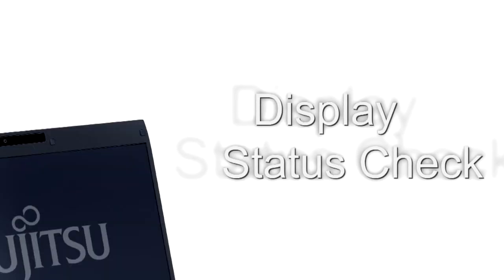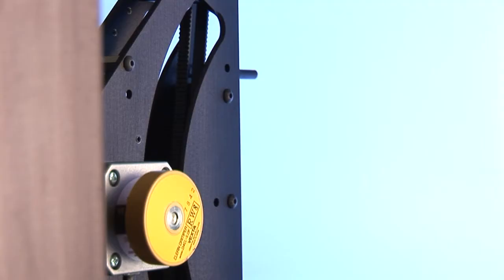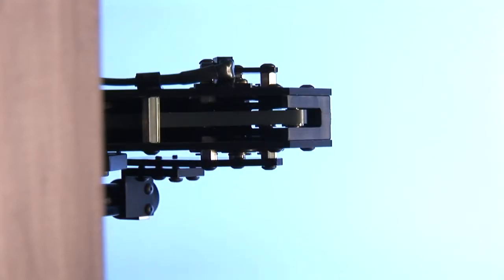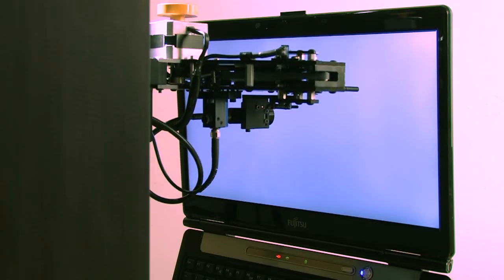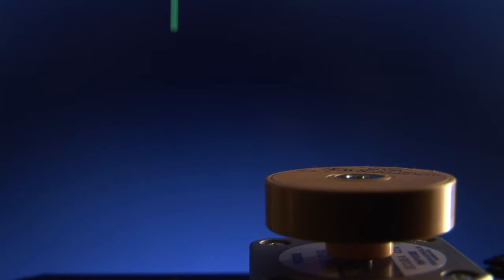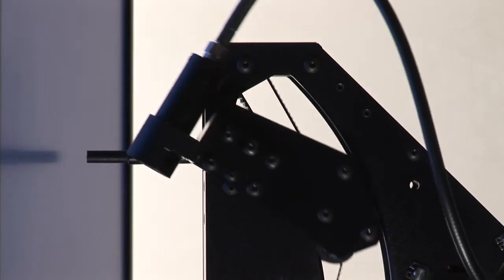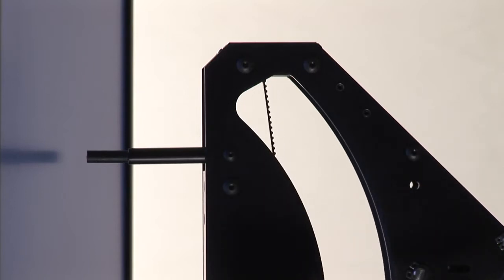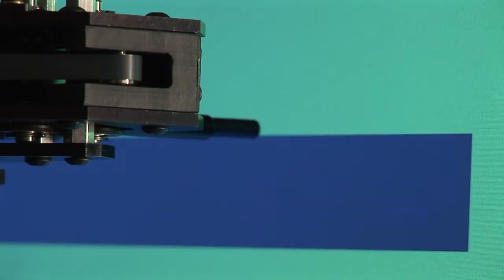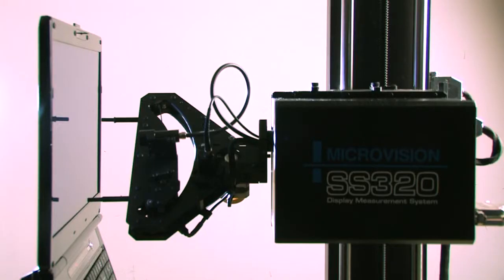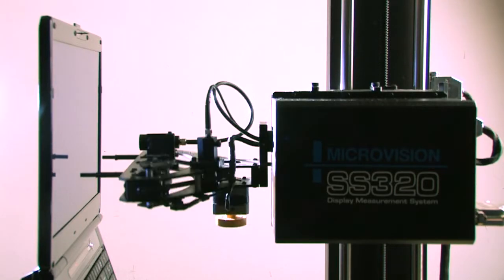Display status check. With this automatic flat panel characterization system, photooptic and colorimetric measurements based on VESA and ISO standards are performed. These tests include, for example, brightness, contrast, uniformity, viewing angle, gamut, gamma and response time.